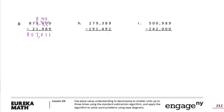Next problem: 9 minus 2 is 7. 8 minus 9 — can't do, so I'll borrow from the 3, it becomes a 2. 18 minus 9 is 9. 2 minus 4 I can't do — that becomes an 8. 12 minus 4 is 8. 8 minus 1 is 7. 7 minus 9 I need to borrow — 17 minus 9 is 8. And 1 minus 1 is 0. Answer: 87,897.